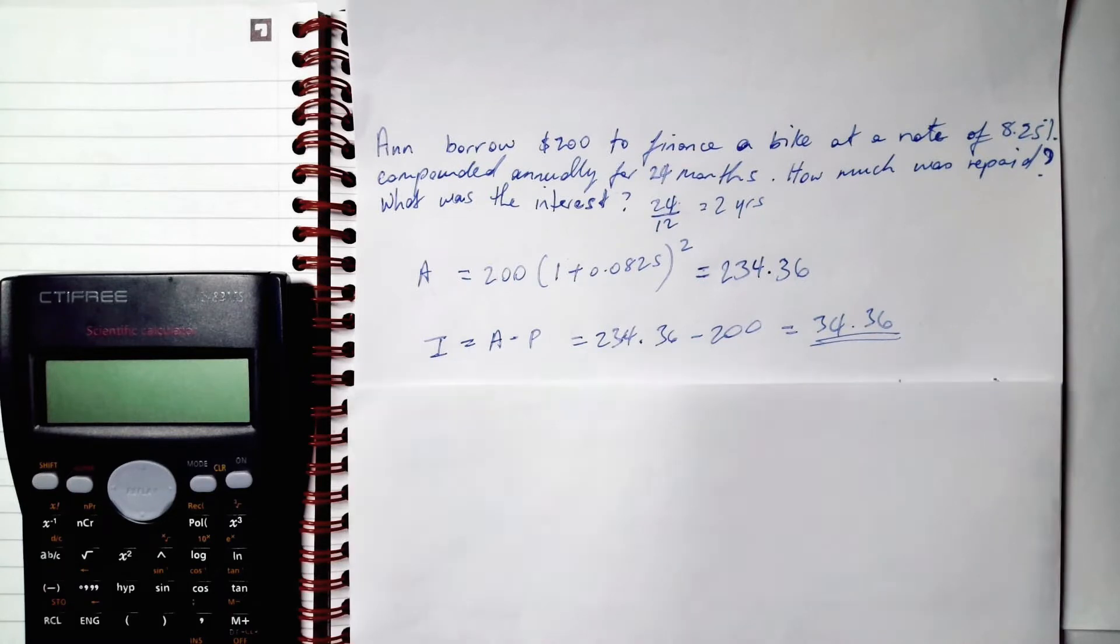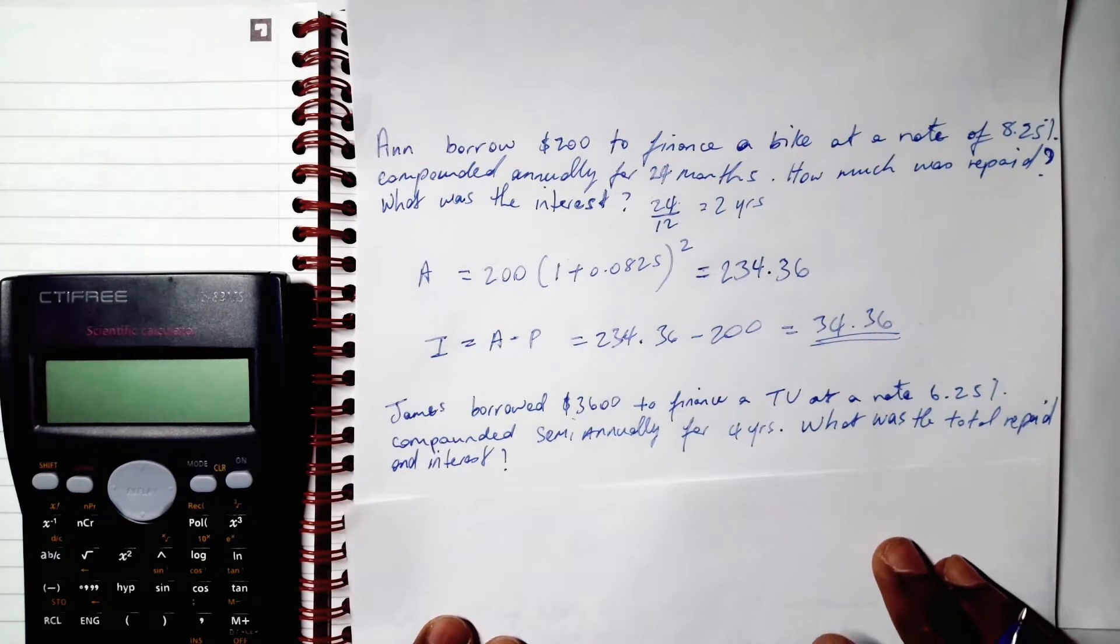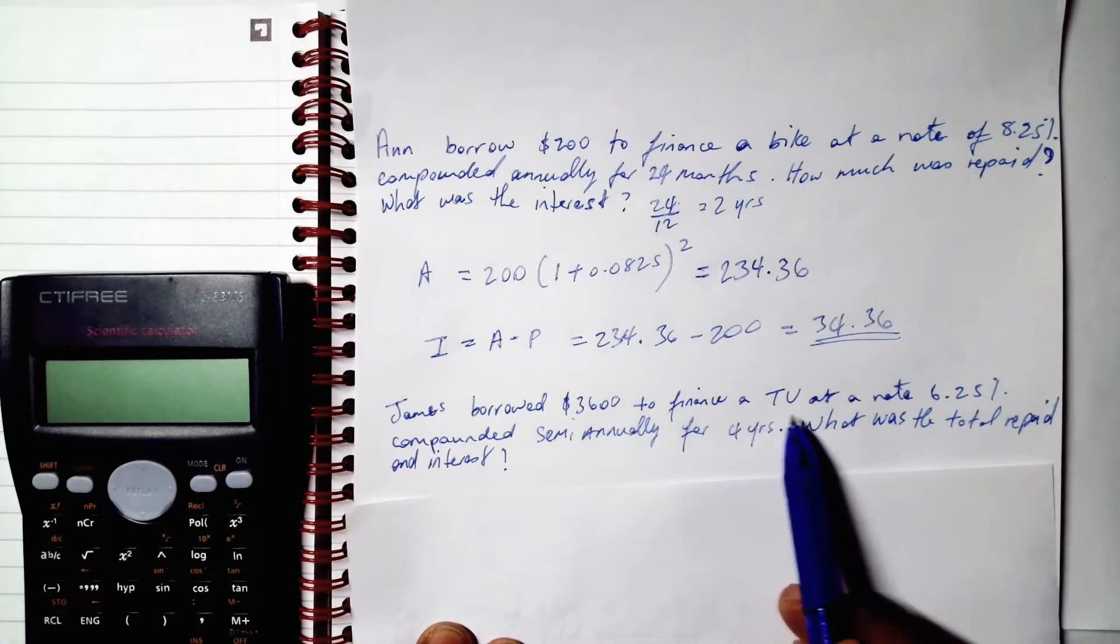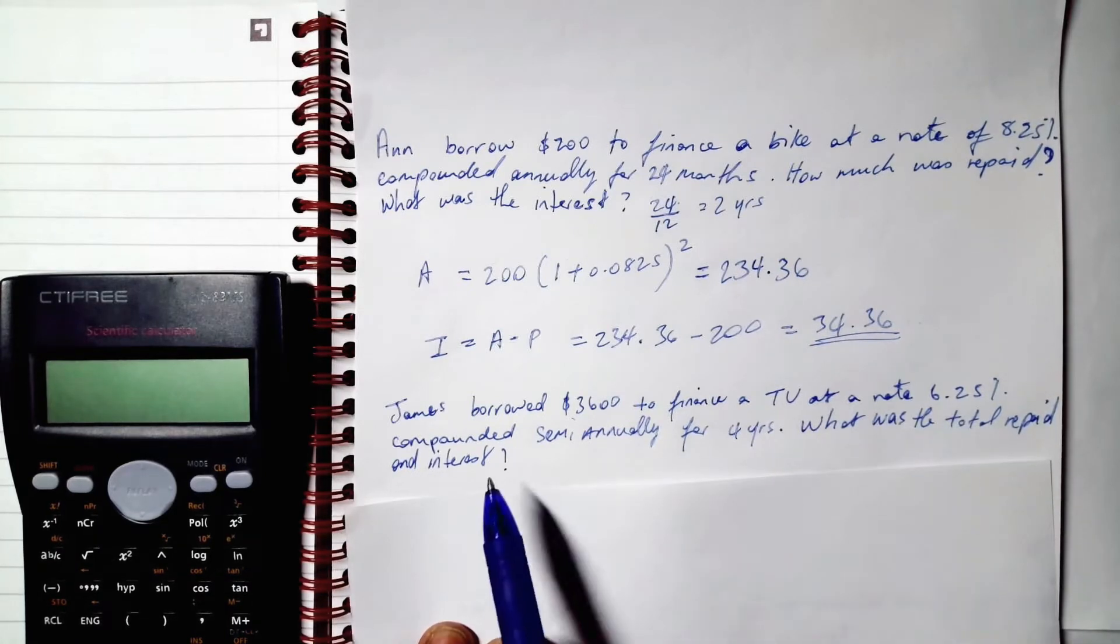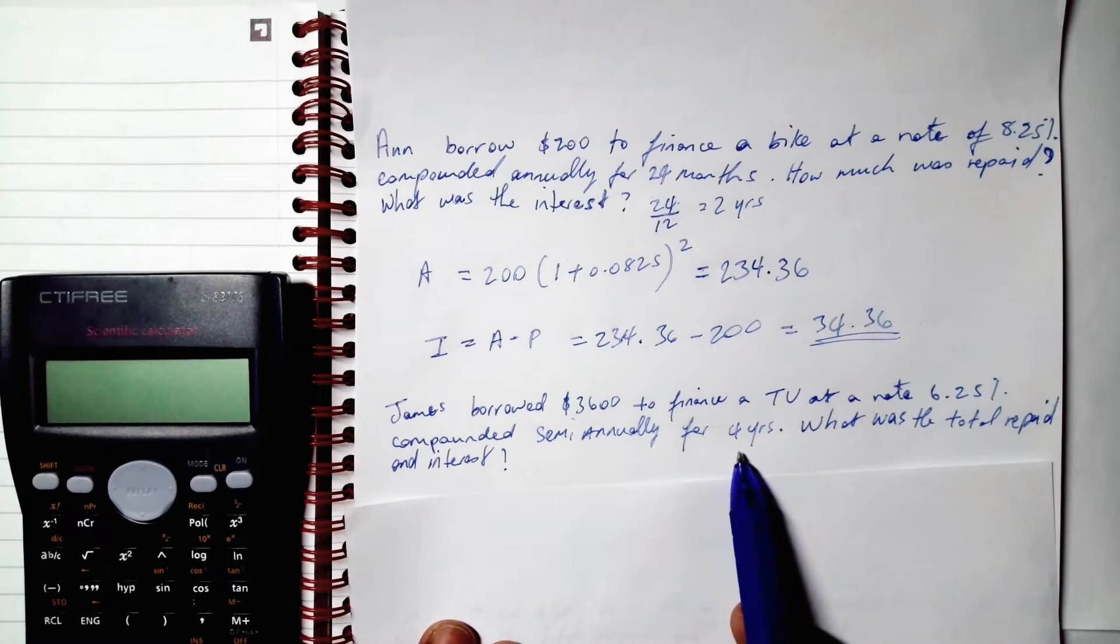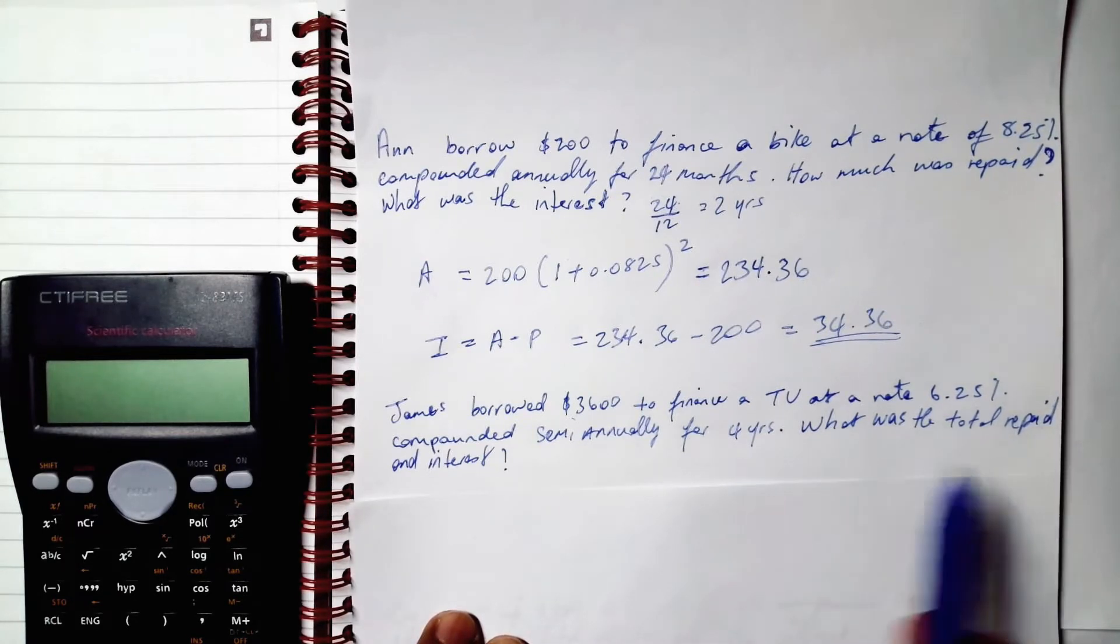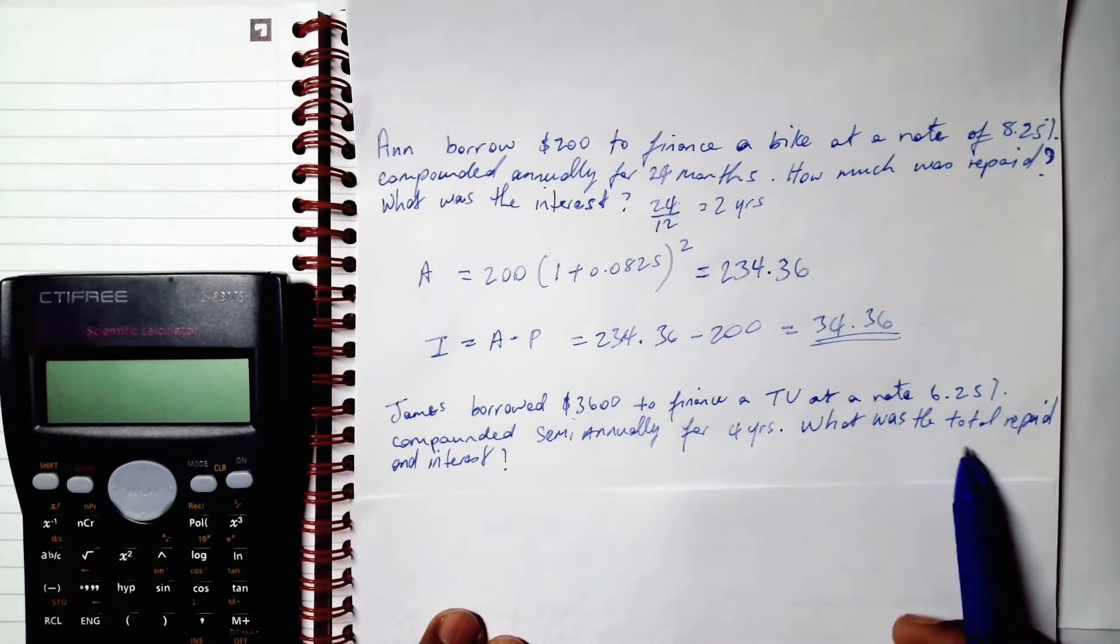All right, so let's continue with the next example. James borrowed $3,600 to finance a TV at a rate of 6.25% compounded semi-annually for four years. What was the total repaid and interest?